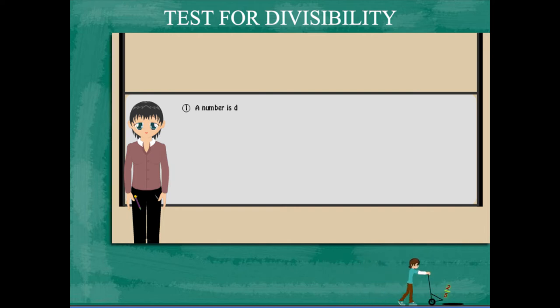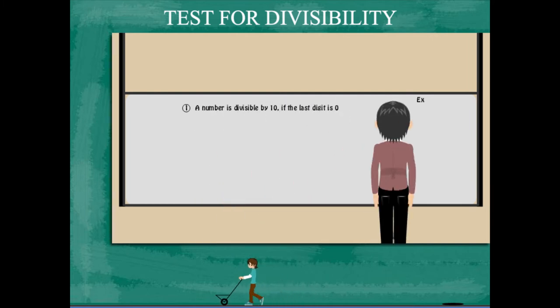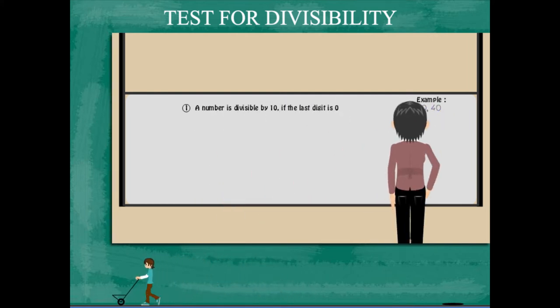She writes the first rule: a number is divisible by 10 if its last digit is 0. Examples are 20, 40, etc.